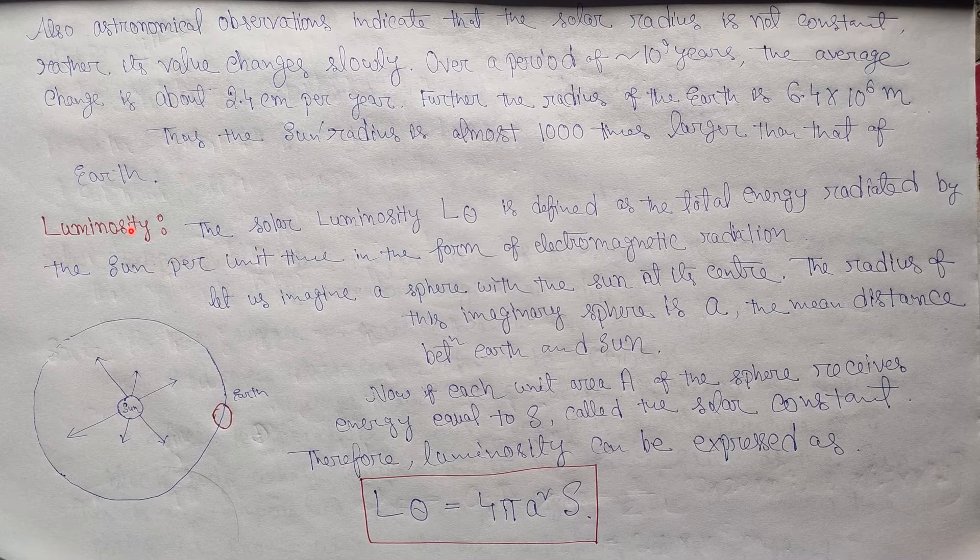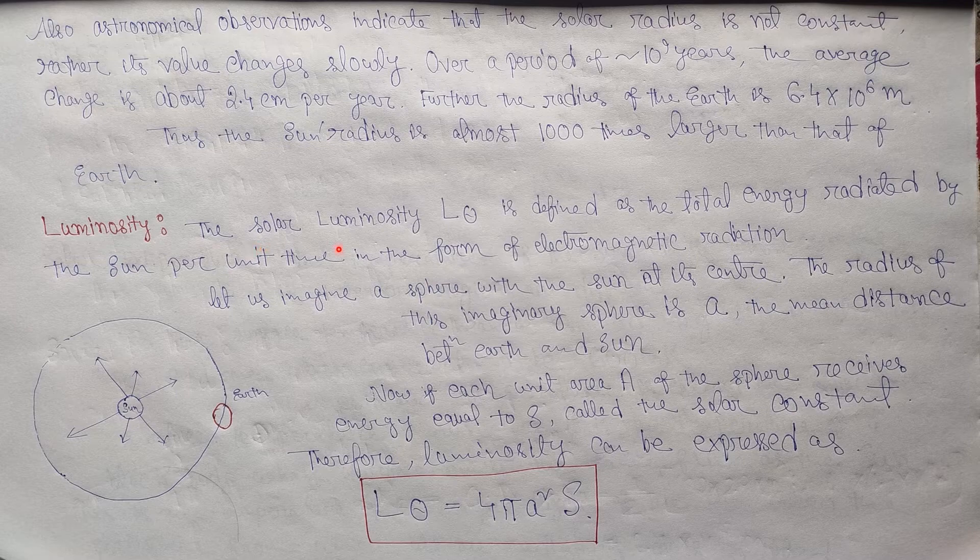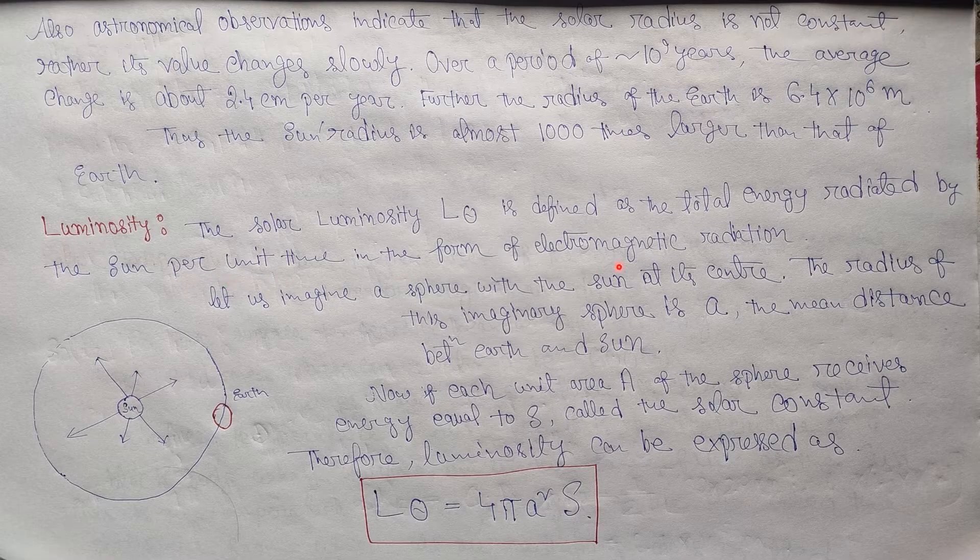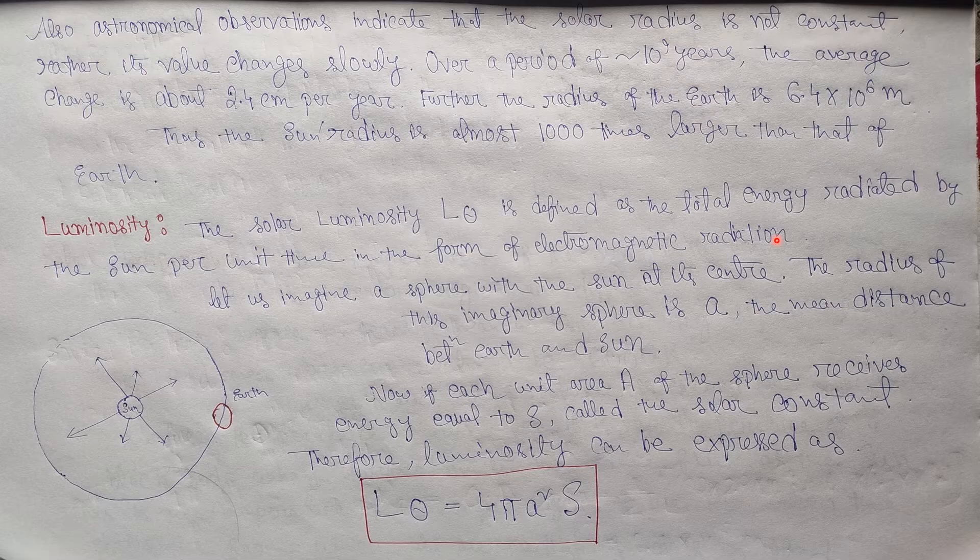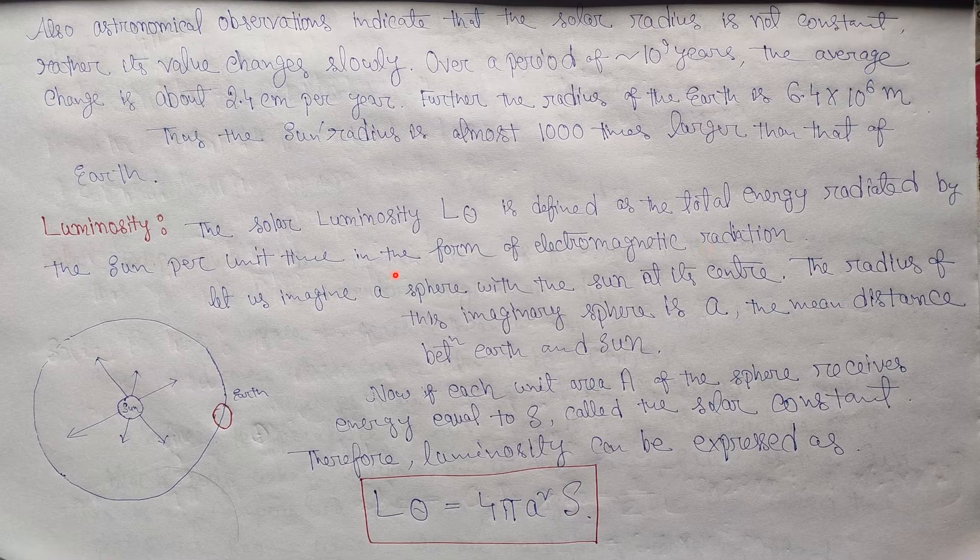Luminosity: the solar luminosity L☉ is defined as the total energy radiated by the sun per unit time in the form of electromagnetic radiations. It is, in a unit time, what amount of energy sun radiates in the form of electromagnetic radiation is known as its luminosity.